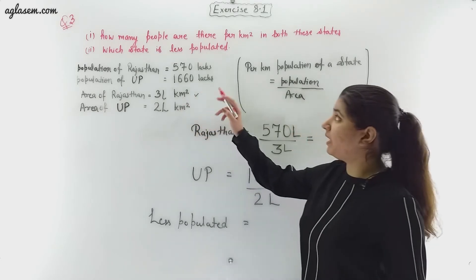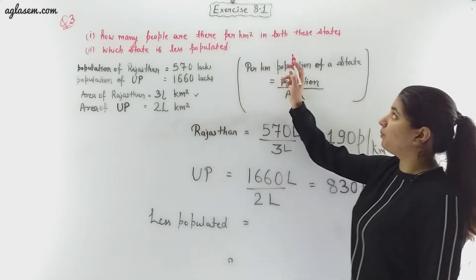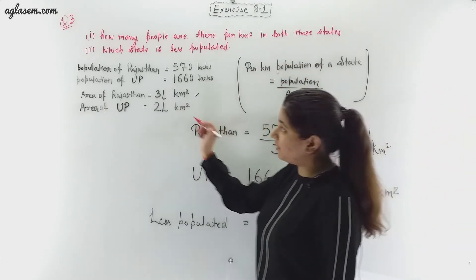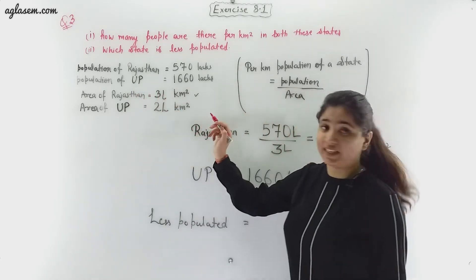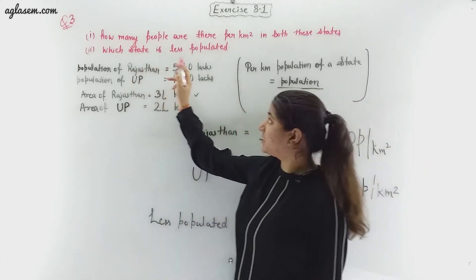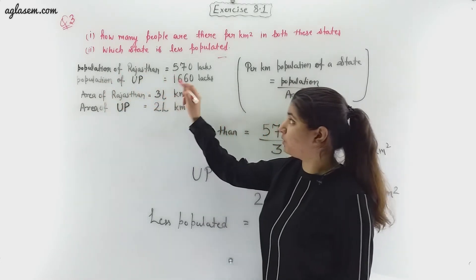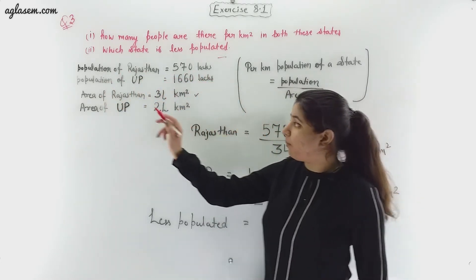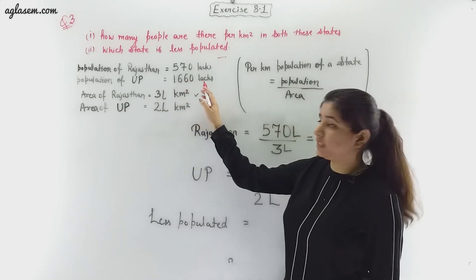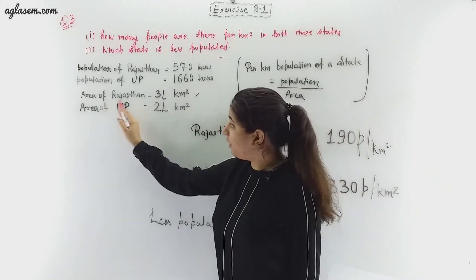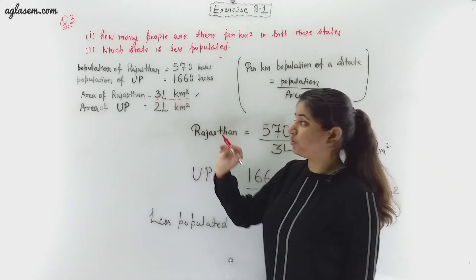Now moving on to the next question which says how many people are there per kilometer square in both these states? The states given are Rajasthan and UP. The second part says which state is less populated. We are given population of Rajasthan is equal to 570 lakhs, population of UP is 1660 lakhs, area of Rajasthan is three lakh kilometer square, and area of UP is two lakh kilometer square.